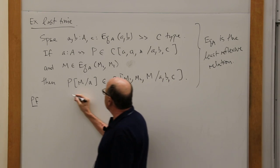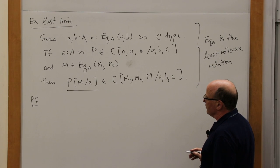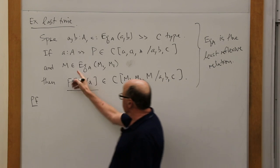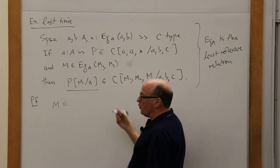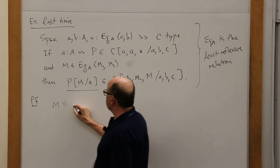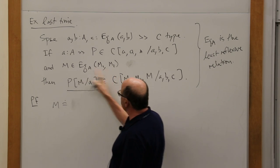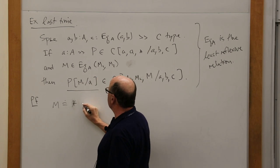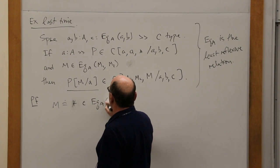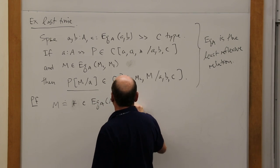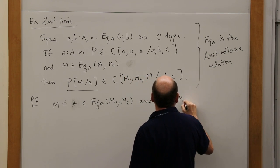The witness to it is you just do a substitution — you plug in P with M for A. The reason is that the definition of the equality type, semantically, means that M is going to be equal to star in EQ_A of M1, M2, because that's how we defined it. Moreover, because of that, M1 will be equal to M2 in A.